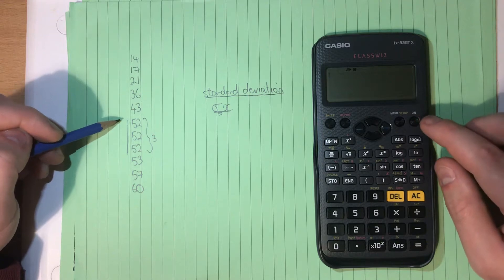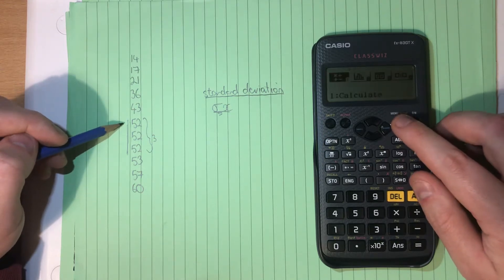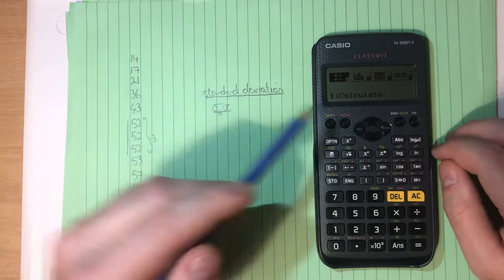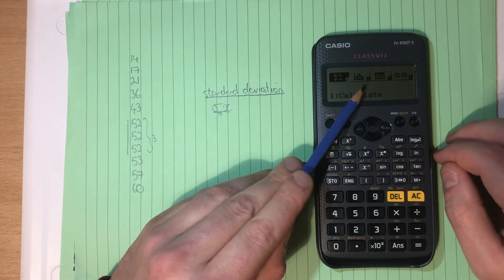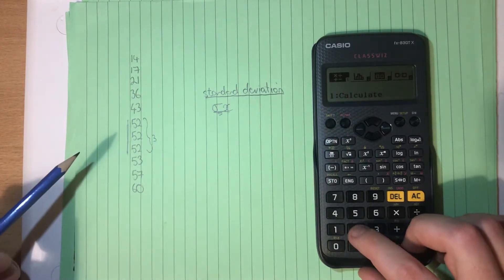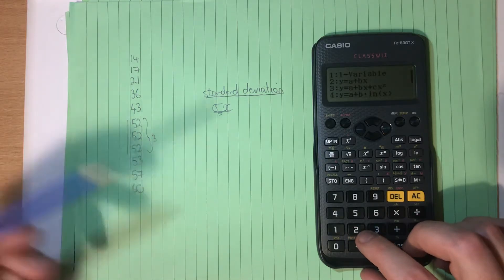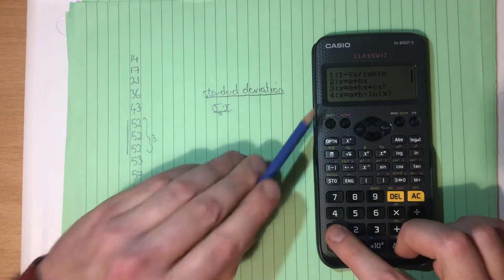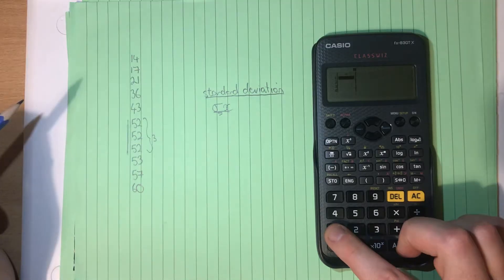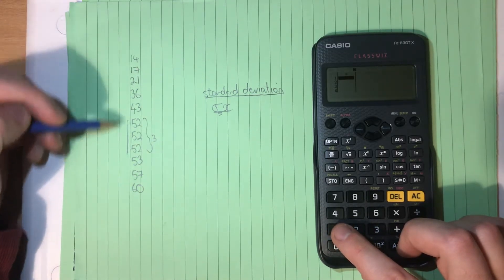So let's get our calculator set up. We go into Menu, and we want Statistics. So we want this guy over here, and that's option number 2. So we select 2. And then as in the previous calculator, we're going to select number 1. And that gets us a table where we can input this data here.